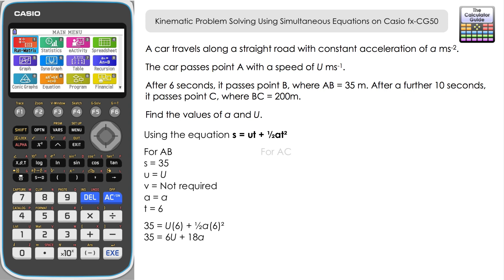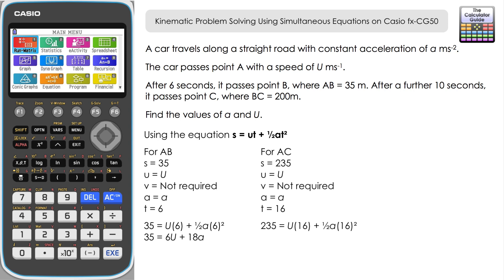We're going to set up the situation for what's happening between A and C, including all the information from the question. The displacement S for AC is 235 meters (35 plus 200). U is still capital U. V is not required. A is still our constant acceleration. T across the whole journey is 16 seconds (6 plus 10), and we can do this because acceleration is constant throughout. Substituting: 235 equals U times 16 plus a half A times 16 squared, which simplifies to 235 equals 16U plus 128A. This is our second linear simultaneous equation.